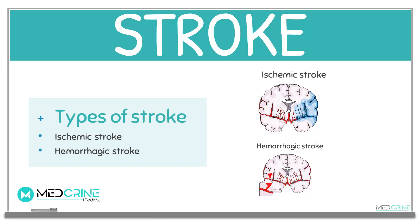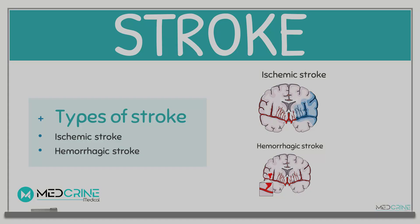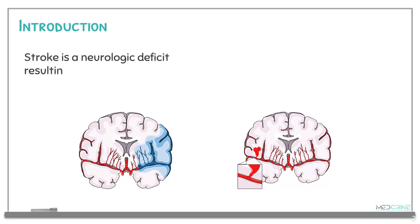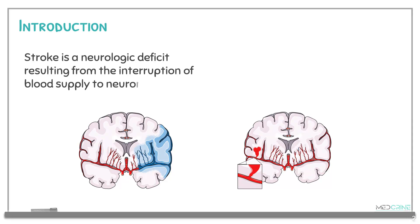Let's start with the definition of stroke. Stroke is defined as a neurologic deficit that results from an interruption of blood supply to the brain tissue or the neuronal tissue.